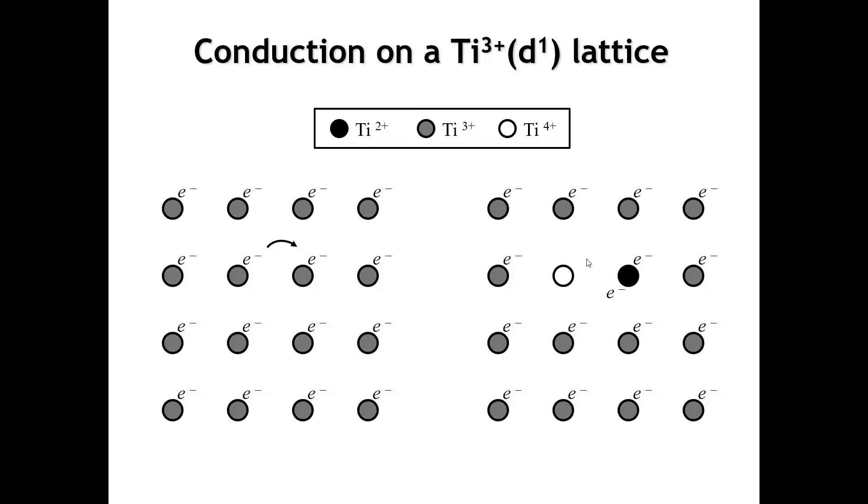The key takeaway is that the electrons are no longer optimally separated. On that titanium 2-plus atom, we now have two electrons that feel repulsion from one another, and that repulsion is important in thinking about conductivity.